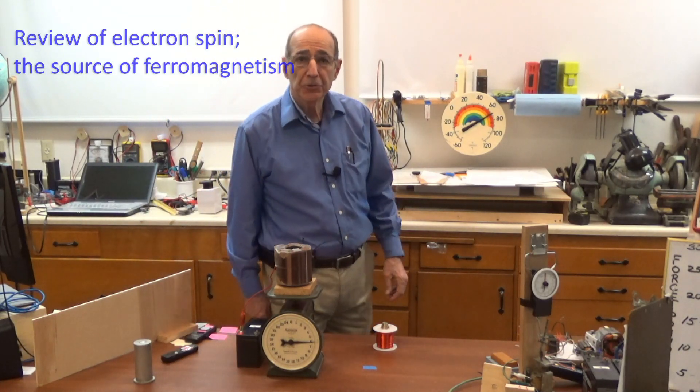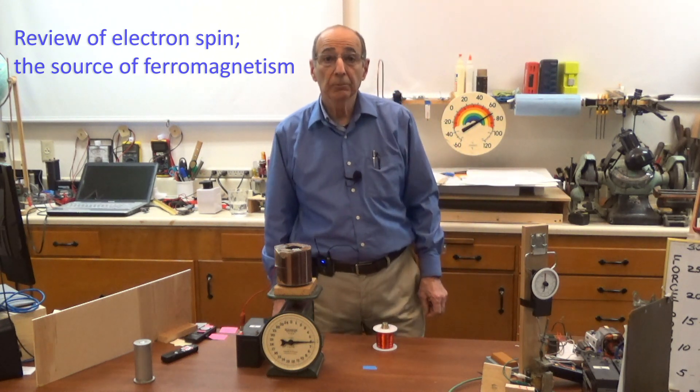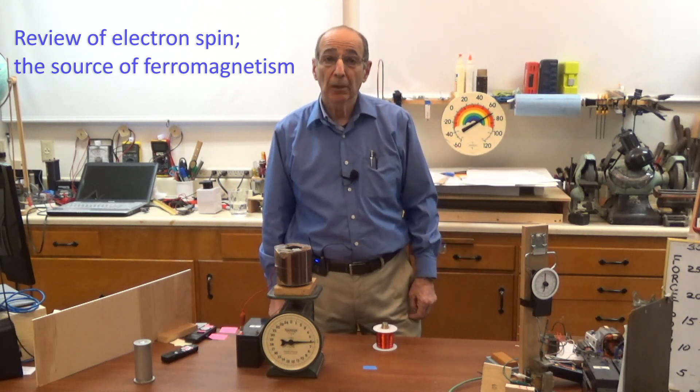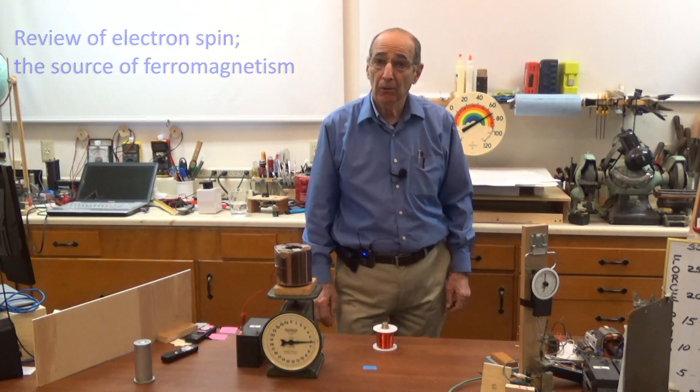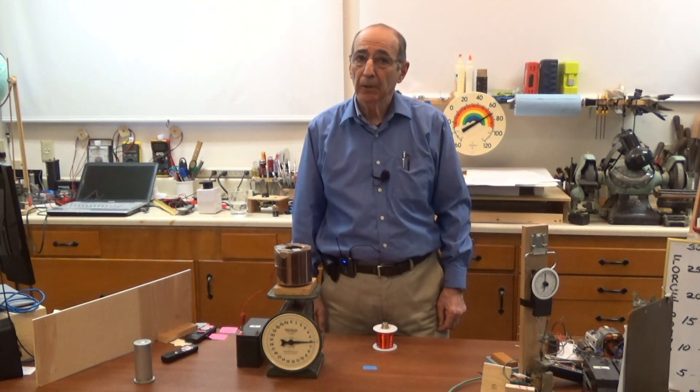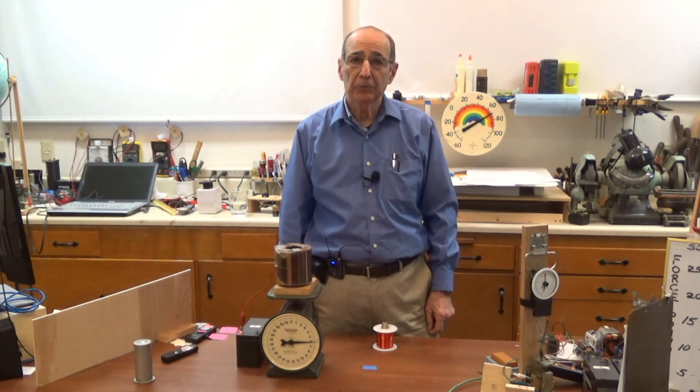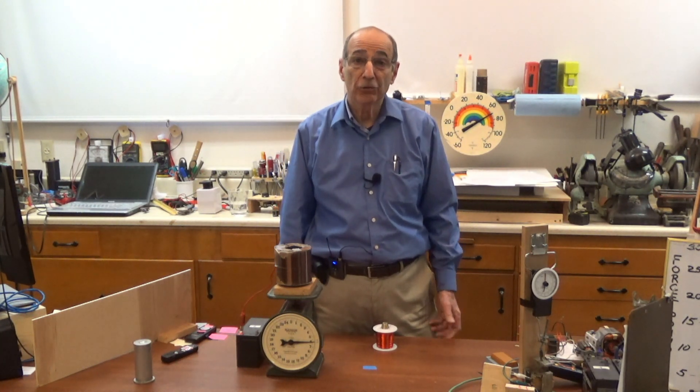Welcome to session nine in our series on electricity and magnetism. In our last session we learned about how electrons have a characteristic called spin and associated with that spin is a magnetic field.